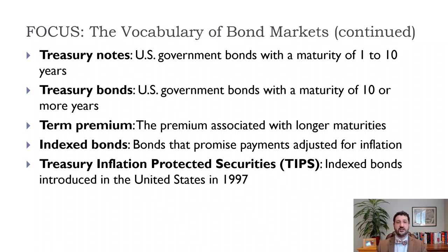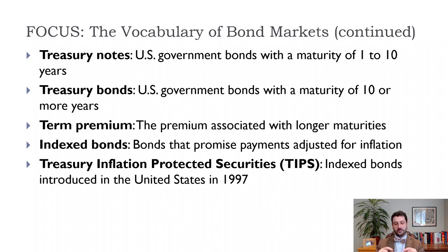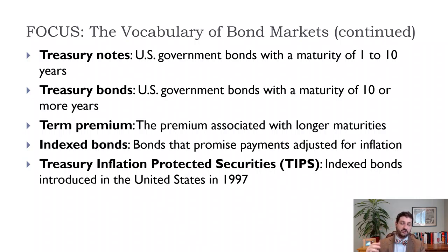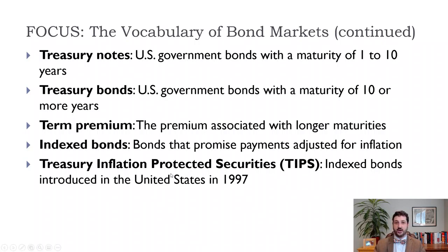Index bonds are bonds that promise payments adjusted for inflation. The most common example is Treasury Inflation-Protected Securities, usually called TIPS. These pay an interest rate that is smaller than a regular bond, but they also add the inflation rate. For example, they might pay 0.5% plus inflation — so if inflation is 2%, you get approximately 2.5%, and if inflation is 5%, you get 5.5%. This is a way for investors to protect themselves against inflation risk, which is a major concern when buying regular nominal bonds.